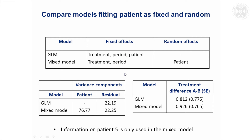I tried fitting two models to this: the general linear model, which would be similar to the paired t-test, except that in crossover studies you want to take account of the period effect — what order the patients received the treatment in — though that's not of particular interest here. We also fit a mixed model, where instead of fitting patients as fixed effects, patients are fitted as random effects.